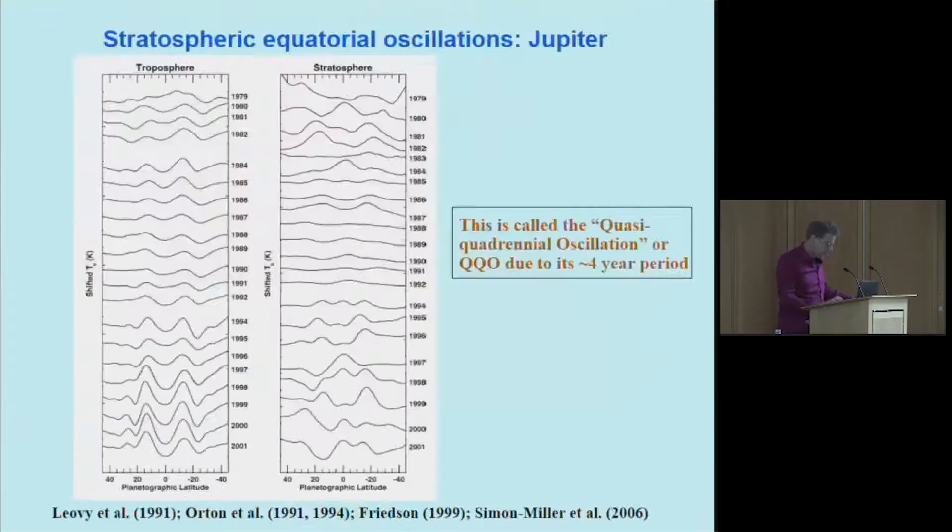It turns out there are stratospheric oscillations on Jupiter and Saturn that are quite interesting. This basically shows the zonal mean temperature structure over time, over a 20-year period from late '70s to about 2000. The key point is just that there are wiggles that move up and down over time, and it turns out this has about a four-year period. There's variations in the temperature with amplitude of order 5 to 10 Kelvin that vary over time in this way on Jupiter.